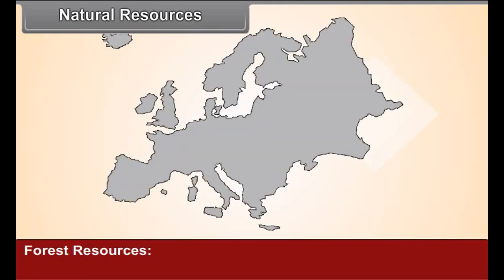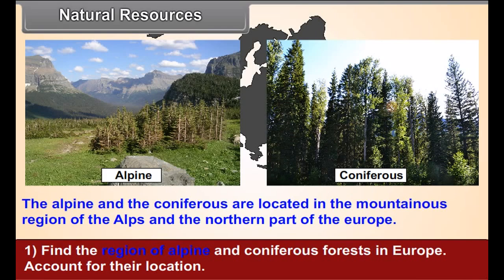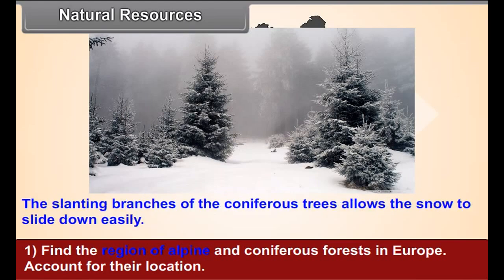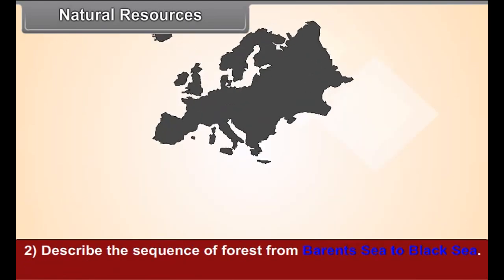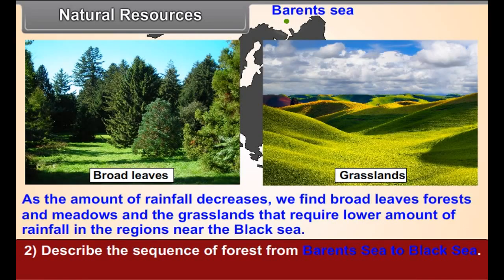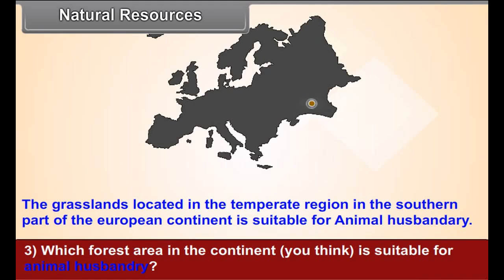Natural Resources — Forest Resources. See color figure 3 and answer the following: 1. Find the regions of alpine and coniferous forests in Europe and account for their location. 2. Describe the sequence of forests from Barents Sea to Black Sea and try to correlate this sequence with the distribution of rainfall using figure 17.4. 3. Which forest area in the continent do you think is suitable for animal husbandry?